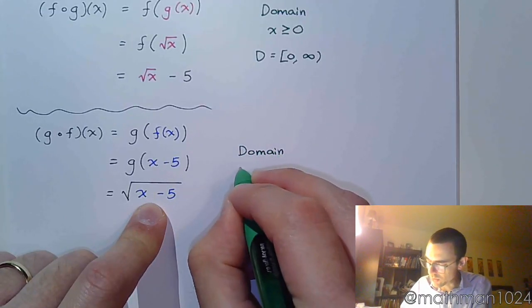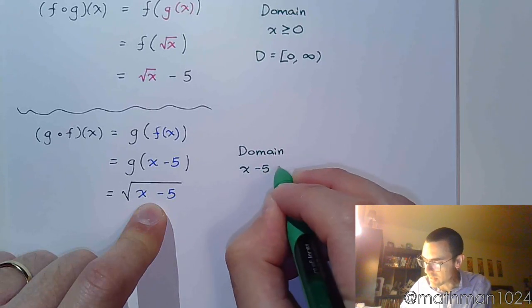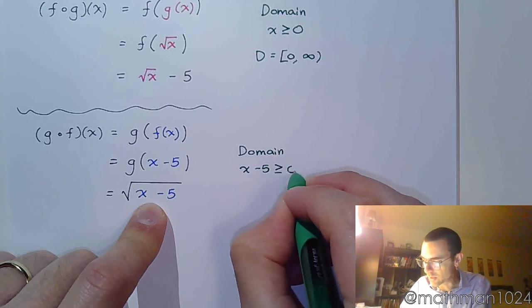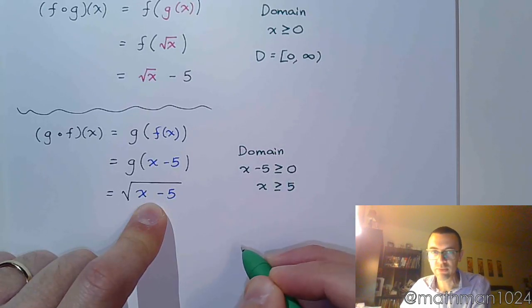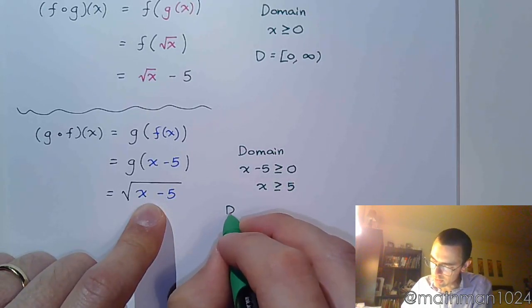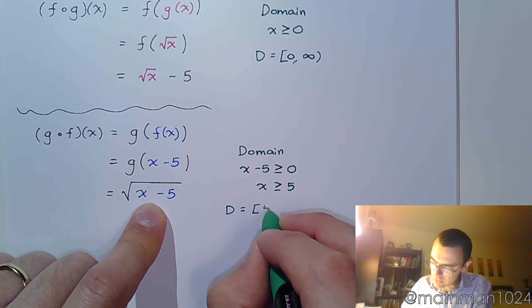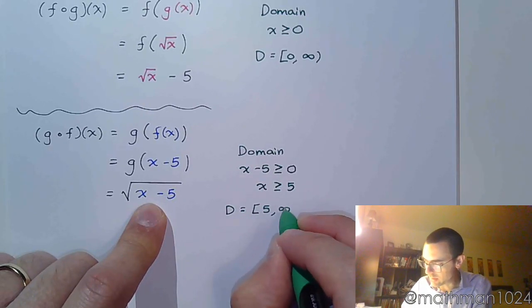And so the domain for this one, we have to make sure that we keep this radicand, x minus 5, it must stay greater than or equal to 0, which, when you solve this, means x is greater than or equal to positive 5, which means his domain is bracket 5 to infinity.